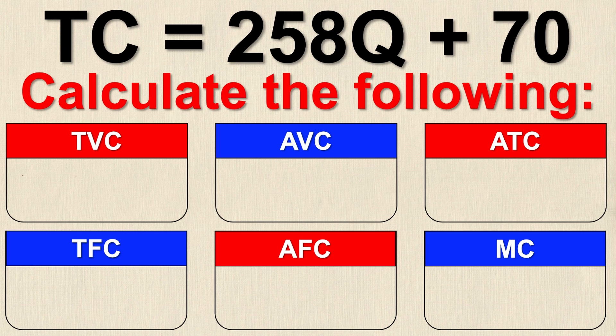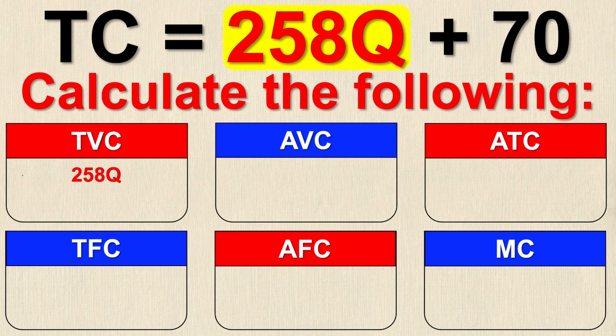The first thing I'm being asked to calculate is the total variable cost, or TVC, in the top left box. Total variable cost is variable based on the quantity of output the firm produces. Looking at the cost equation, we need to find which part depends on Q — and that's 258Q, which will increase or decrease as Q increases or decreases. So the total variable cost is 258Q — this is the part of total cost that varies with Q.